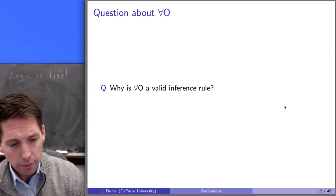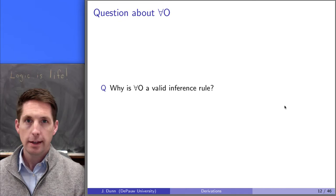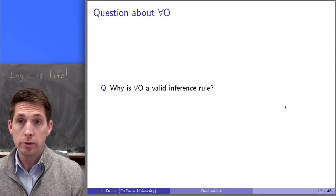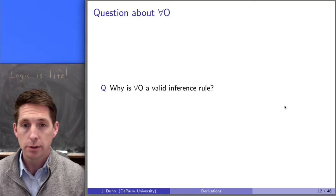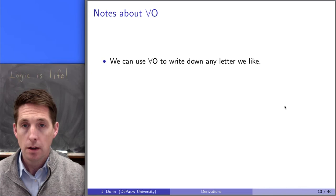Now that we've seen some examples, hopefully you can see why universal out is a valid inference rule. It says: if you know that something's true of everybody — everything in your domain — then you know it's true of every single named thing. So if you know everybody is happy, then for any named thing in your domain, you know that it's happy. That's essentially what the universal out inference rule lets us do.